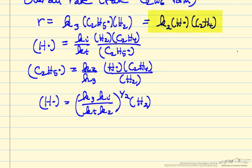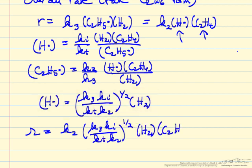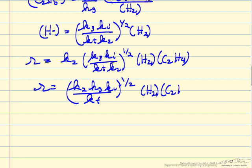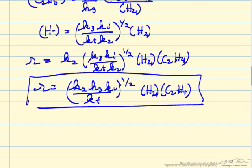Since our overall rate equals K2 times the hydrogen atom concentration times [C2H4], after substituting and simplifying, our final rate expression is K2·K3·(K_i/K_T)^(1/2) times [H2] times [C2H4] — first order in hydrogen and first order in ethylene. Note that if the termination rate constant is larger, the rate is slower, but if the initiation rate constant is larger, the rate is faster. This is the overall rate that forms ethane (C2H6) by hydrogenating ethylene in the gas phase via a chain reaction.